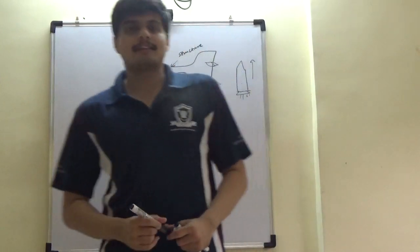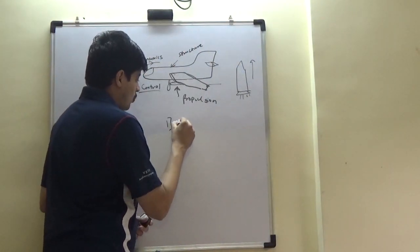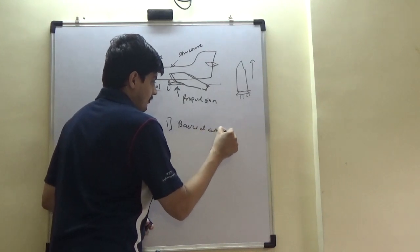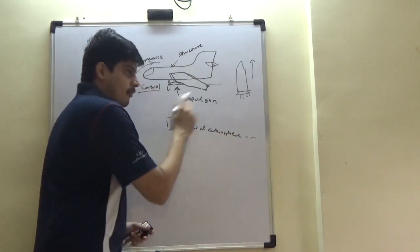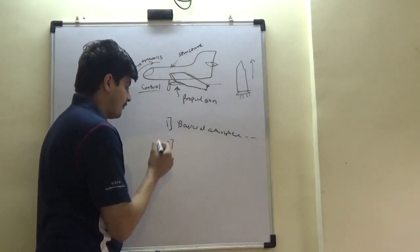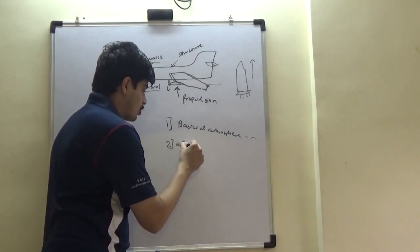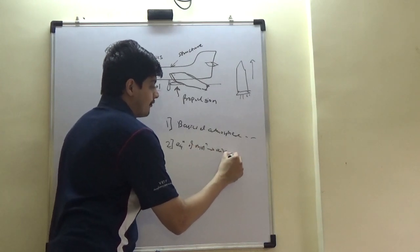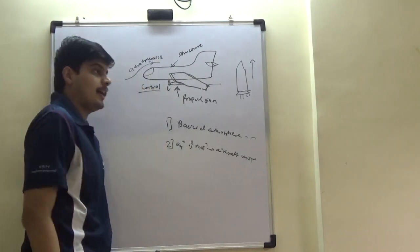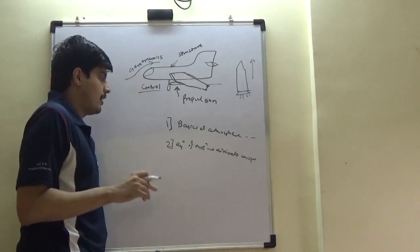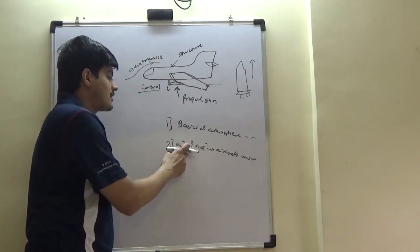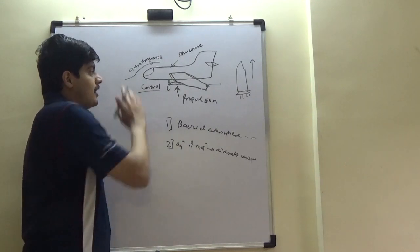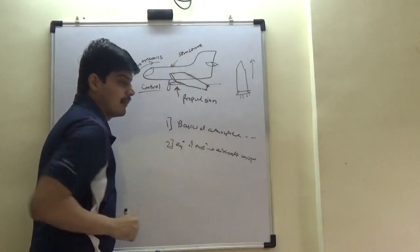Flight mechanics typically will have four parts. One is basics of atmosphere — where things fly, how the altitudes combine. Second is equations of motion, simply aircraft motion. Here you look at the aircraft as an object, as a body, and apply the full set of Newtonian equations of motion to understand how it flies. These other knowledges are very important here.